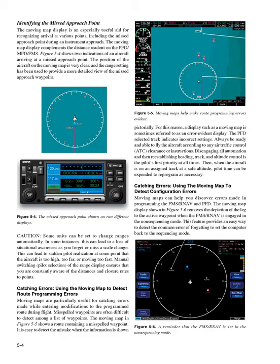Catching errors — using the moving map to detect route programming errors. Moving maps are particularly useful for catching errors made while entering modifications to the programmed route during flight. Misspelled waypoints are often difficult to detect among a list of waypoints. The moving map in Figure 5-5 shows a route containing a misspelled waypoint. It is easy to detect the mistake when the information is shown pictorially. For this reason, a display such as a moving map is sometimes referred to as an error-evident display.